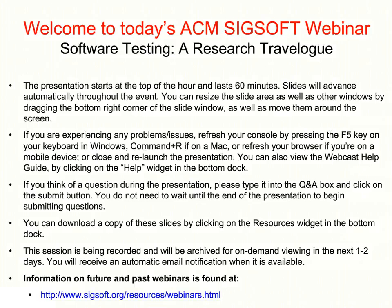Today's presentation is on software testing — a research travel log — by Alex Orso from Georgia Tech and Greg Rothermel from the University of Nebraska at Lincoln. Alessandro Orso, we tend to call him Alex, is a professor in the College of Computing at the Georgia Institute of Technology. He received his PhD in Computer Science in 1999 from the Politecnico di Milano in Italy and has been at Georgia Tech since March 2000. His area of research is software engineering, with an emphasis on software testing and program analysis.